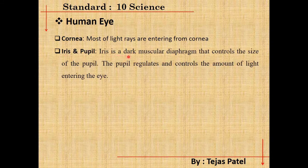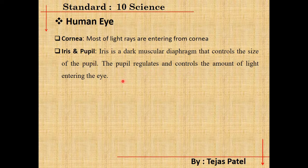Next is the iris and pupil. The iris is a dark muscular diaphragm that controls the size of the pupil. You might have observed that sometimes more light enters your eyes and sometimes less — your eyes adjust accordingly. This is the function of the iris and pupil: they regulate and control the amount of light entering into the eye.